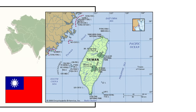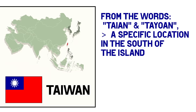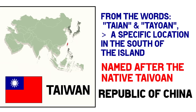Going south to Taiwan, the island has had several names throughout history. Formosa, meaning beautiful, was a name chosen by the Portuguese when they sighted the island in 1542. Taiwan itself seems to come from the words Tayan and Taiwan, the local terms used to refer to a specific location in the south of the island. This area is likely to have been named after the Taiwan people who are native to the land. Although its official name is Republic of China, differentiating itself from the People's Republic of China since the two sides opposed each other in the country's internal conflict of the 20th century.